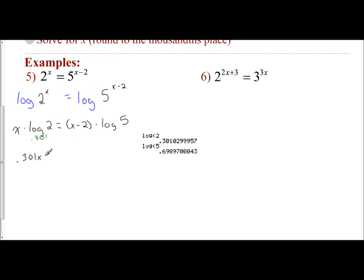So I multiply them to get 0.301x. It's equivalent. I have my x minus 2 times log of 5. And log of 5 is 0.699. So that's what I'm going to multiply by. I'm going to put it in front.